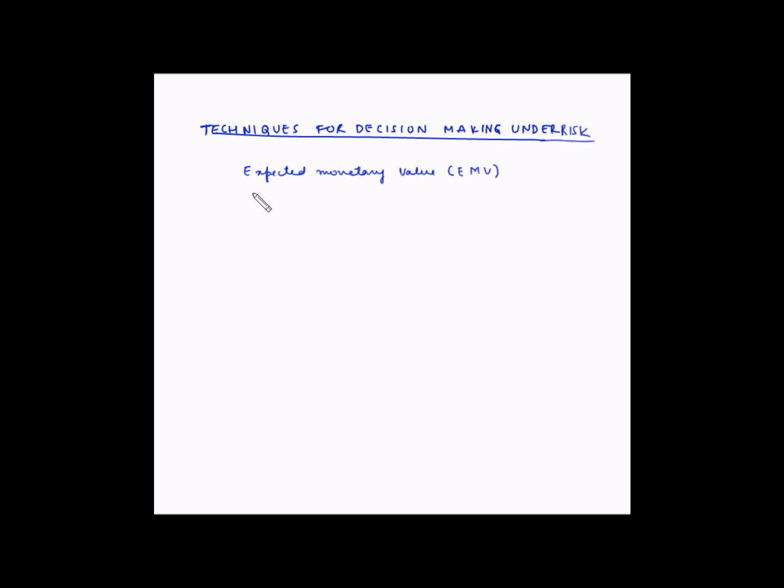So let us look at the payoff matrix. Let us take the example of rolling of a dice. There are six possible options for you to choose. These are known as strategies or decision alternatives.